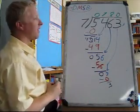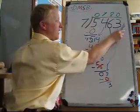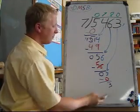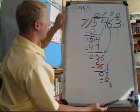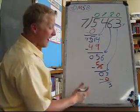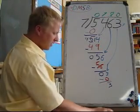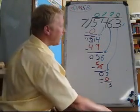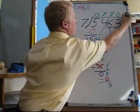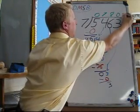B bring down. There's nothing to bring down and I like to put a little x to say that I knew there was nothing left. But I still have this 3 down at the bottom. I've already tried to divide it. I am finished the question. So what is this 3? Well that 3 is our remainder. Remainder 3.